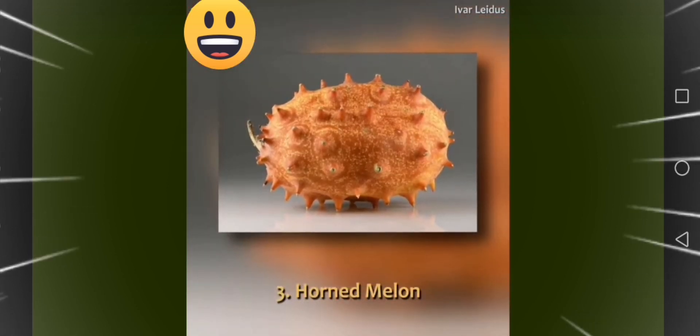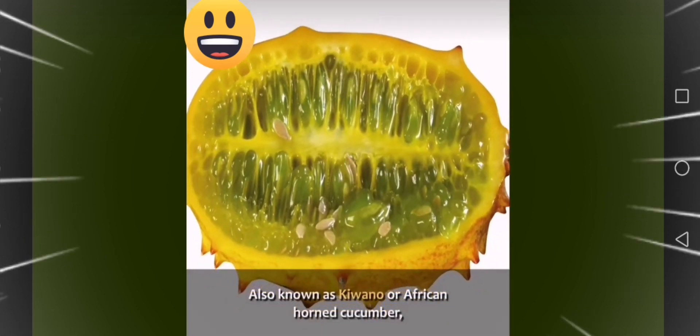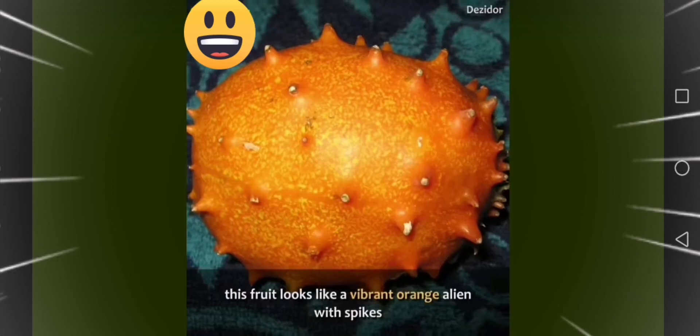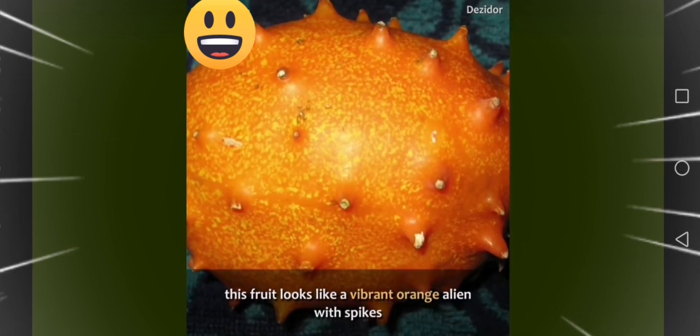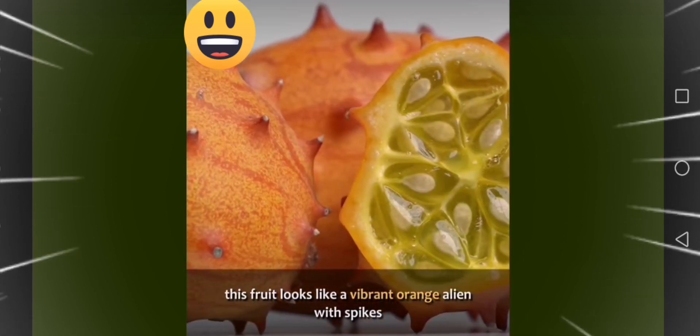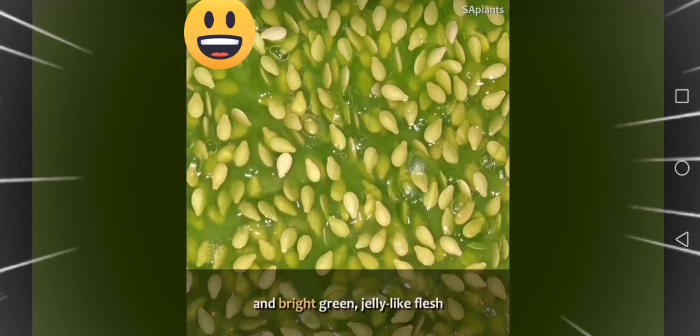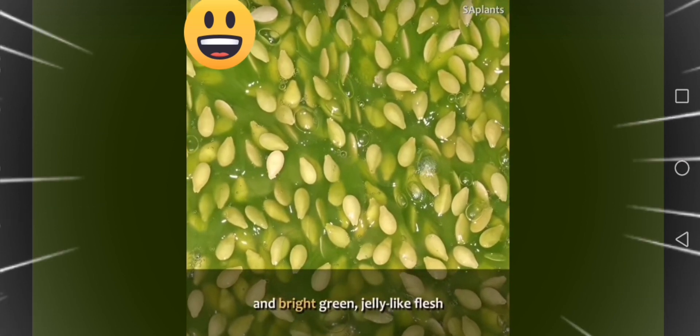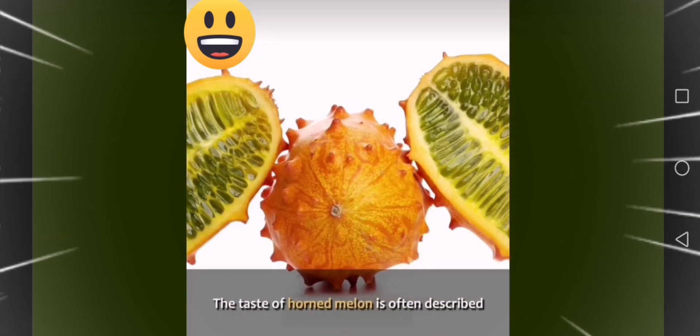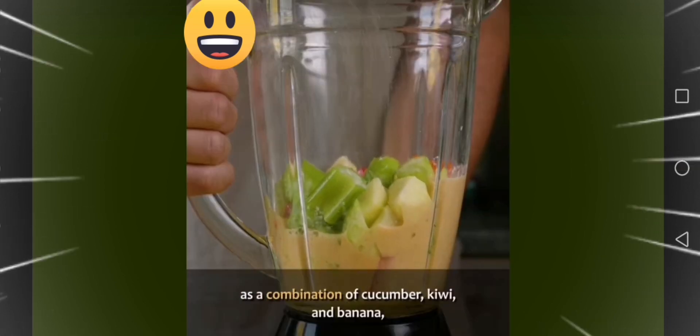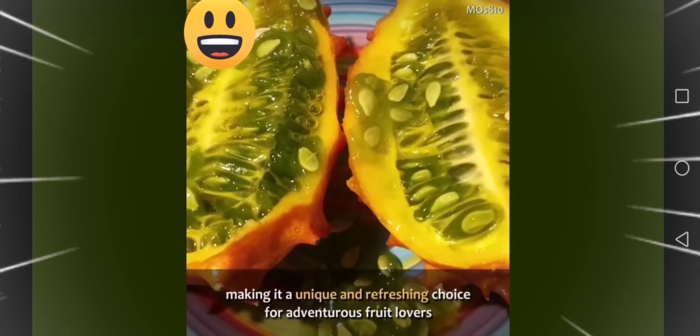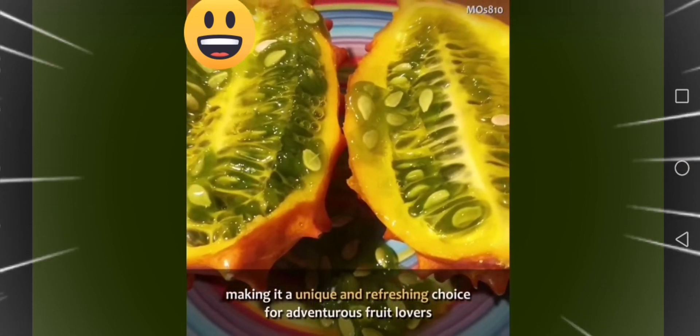Three, horned melon. Also known as kiwano or African horned cucumber, this fruit looks like a vibrant orange alien with spikes. Native to Africa, it has a distinctive horned exterior and bright green, jelly-like flesh. The taste of horned melon is often described as a combination of cucumber, kiwi, and banana, making it a unique and refreshing choice for adventurous fruit lovers.